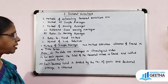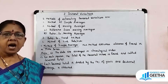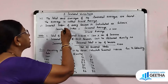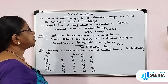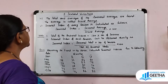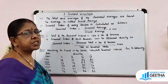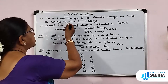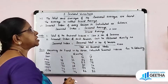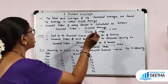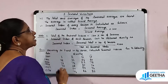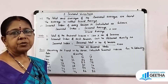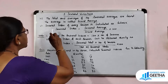Third, each seasonal total is divided by the number of years and the seasonal average is obtained. Fourth, the total and average of all seasonal averages are found. This overall average is called the Grand Average.